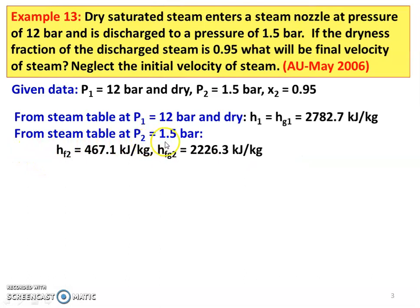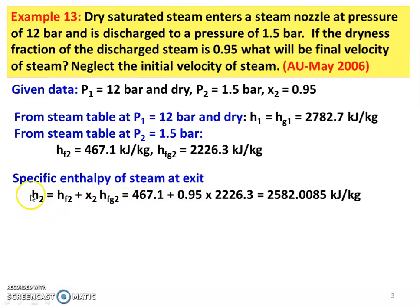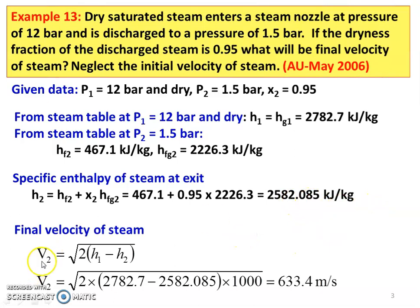From the steam table at P2 equals 1.5 bar, H_F2 equals 467.1 kilojoules per kilogram and H_FG2 equals 2226.3 kilojoules per kilogram. We calculate the specific enthalpy at exit: H2 equals H_F2 plus X2 into H_FG2, which is 467.1 plus 0.95 into 2226.3 equals 2582.085 kilojoules per kilogram. For isentropic flow, V2 equals square root of 2 into (H1 minus H2), giving square root of 2 into (2782.7 minus 2582.085) into 1000, and the final velocity is 633.4 meters per second.